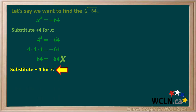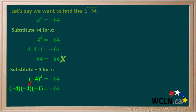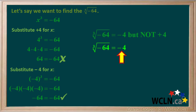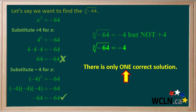Now substituting negative 4: negative 4 cubed is negative 4 times negative 4 times negative 4. Negative 4 times negative 4 is positive 16, and positive 16 times negative 4 equals negative 64. So we get negative 64 equals negative 64, which is correct. Therefore, negative 4 is the cube root of negative 64 — not positive 4. The cube root of negative 64 is simply negative 4, and there is only one correct solution.